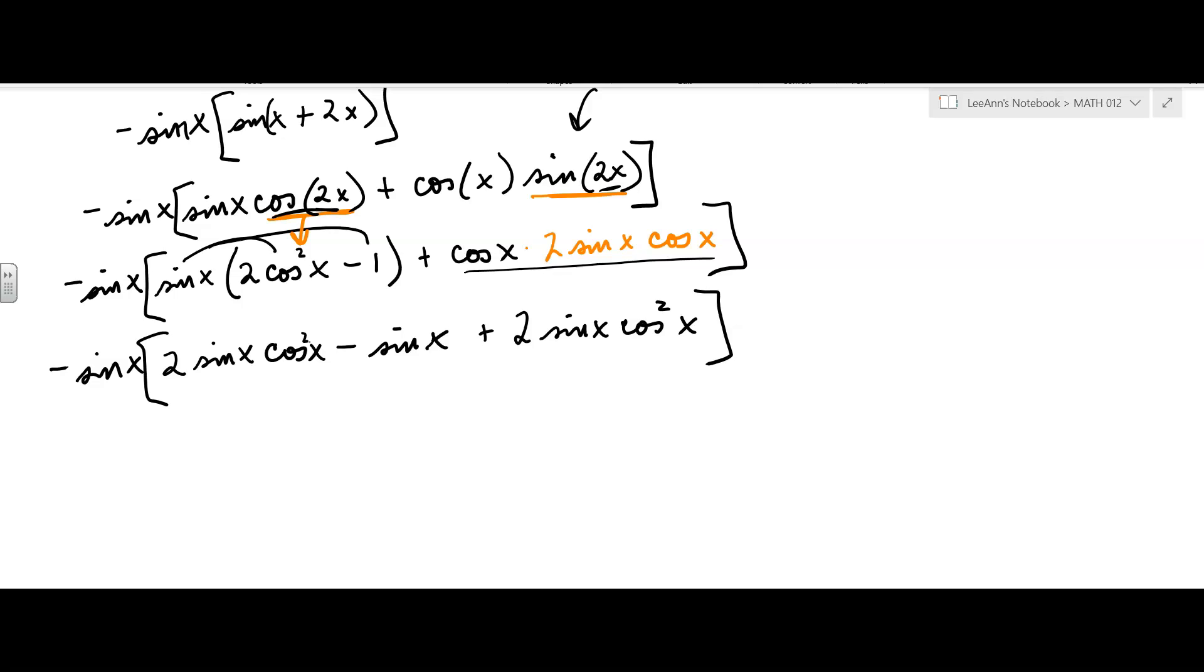Okay, now we're going to go ahead and combine. So, this is a 2 sine x cosine squared x, and this is a 2 sine x cosine squared x. We're going to combine those. So, I've got minus sine x. We're almost done. 4 sine x cosine squared x minus sine x.